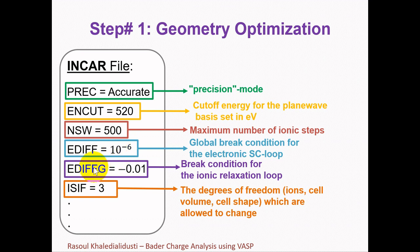The next tag is EDIFFG, which defines the break condition for the ionic relaxation loop. If the change in the total or free energy is smaller than EDIFFG between two ionic steps, relaxation will be stopped. The default value in VASP is 10 times EDIFF, but a negative value has a different meaning for EDIFFG — in this case the relaxation will stop if all forces are smaller than the absolute value of EDIFFG. This is usually a more convenient setting, and I always use the negative value for the break condition of the ionic relaxation loop.